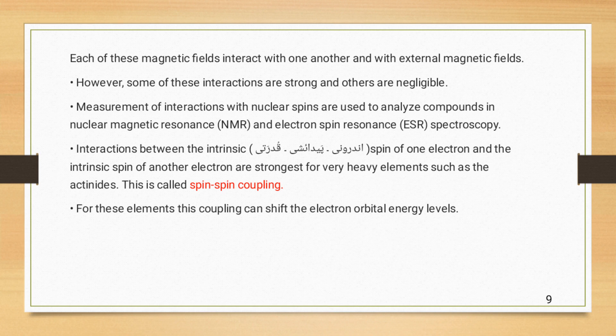Interactions between the intrinsic spin of one electron and the intrinsic spin of another electron are strongest for elements such as the actinides. This is called spin-spin coupling. For these elements, this coupling can shift the electron orbital energy levels higher than the expected.